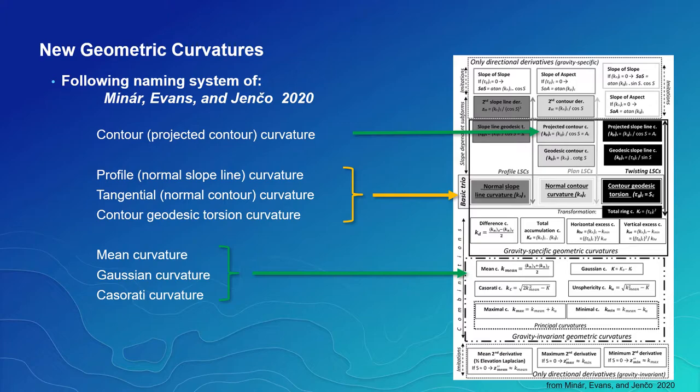They and others have pointed out inconsistencies and confusion in naming and formulas related to curvature, confusion that we also contributed to and wanted to resolve. So after reading this and some correspondence with Josef, we decided to adapt our names to the naming conventions proposed in their paper and in the upcoming version of ArcGIS included some additional curvature types they recommended as well.